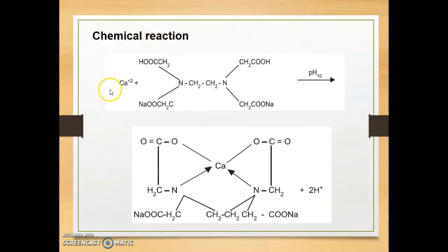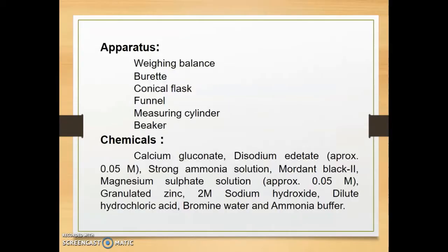Standard calcium gluconate contains not less than 98.5% and not more than 102.0% of calcium gluconate. This is the chemical reaction which is involved in assay of calcium gluconate: calcium plus di-sodium EDTA in presence of strong ammonia solution having pH 10 giving calcium metal complex. Here this nitrogen acts as the heteroatom which reacts with calcium to form the coordinate bond. Di-sodium EDTA is the example of multi-dentate ligand.